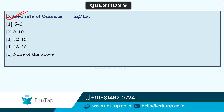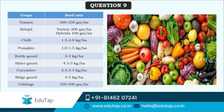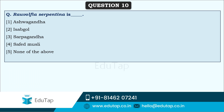The seed rate of onion is 12 to 15 kg per hectare. Other vegetable crop seed rates: tomato — 300 to 350 grams per hectare; brinjal — 200 grams (hybrid: 100 grams) per hectare; chili — 1.5 to 2 kg; pumpkin — 1 to 1.5 kg; bottle gourd — 3 to 4 kg; bitter gourd — 4.5 to 5 kg; cucumber — 2.5 to 3.5 kg; ridge gourd — 4 to 5 kg; cabbage — 350 to 500 grams per hectare.